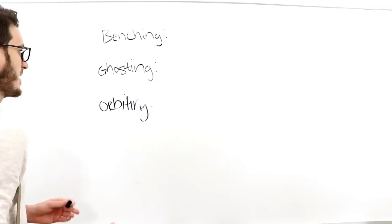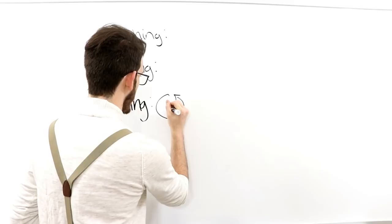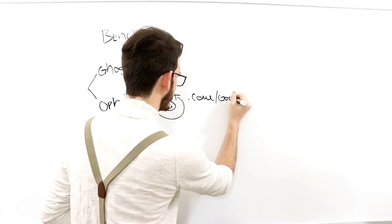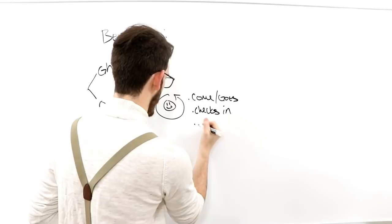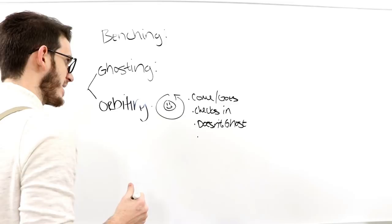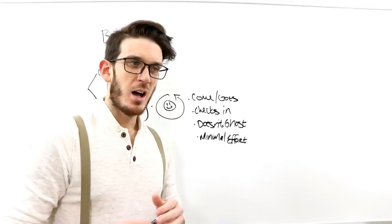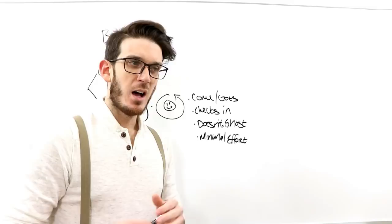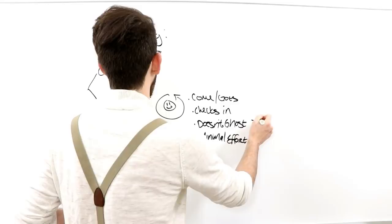Now here's the two that people usually get wrong right here. They always mix these up. Orbiting is when a guy literally keeps, if this is you right here in the middle, it's when a guy keeps tabs on you. He comes and goes, checks in, doesn't ghost, which you'll find out what that is. He's giving minimal effort and things like that. Orbiting is basically where a guy's not fully invested in you, not fully interested, but he sticks around just to make sure that you're still there, that you're still interested. And if you're losing it, he's going to put more effort in. He might go up to benching, which we'll explain that in a bit.